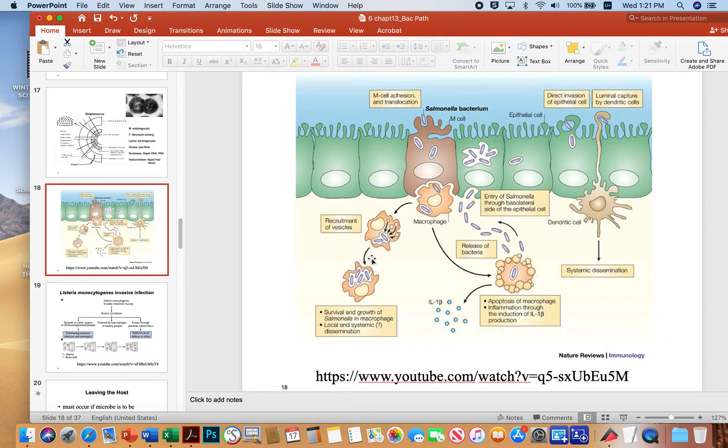But what happens with salmonella in some cases is that the salmonella can survive and grow inside the macrophage and cause an infection. Often what the salmonella will do is they'll grow inside the macrophage and they'll bust back out. And then they'll pop back into the basal surface of the cells and reinfect the intestinal lining.